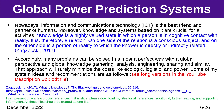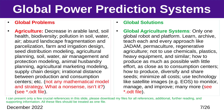Some of my system ideas and recommendations are as follows. Global Problem — Agriculture: decrease in arable land, soil health, biodiversity, pollution in soil, water, and air, absurd landscape fragmentation and parcelization, farm and irrigation design, seed distribution modeling, agricultural planning, etc. Global Solution — Global Agriculture Systems: learn, archive, and teach each and every approach like YATAM, permaculture, regenerative agriculture, avoiding chemicals, plastics, heavy equipment, and similar, and many more.